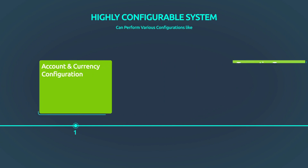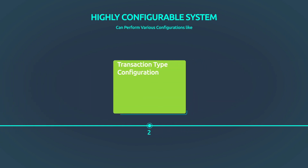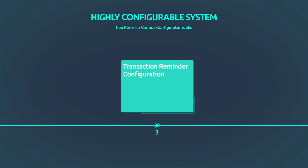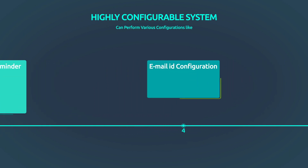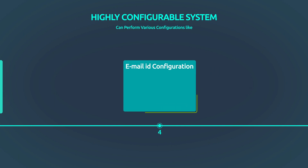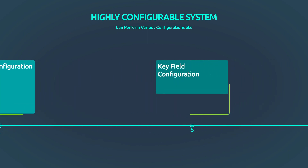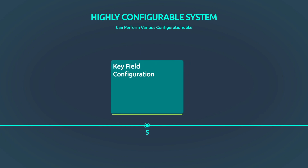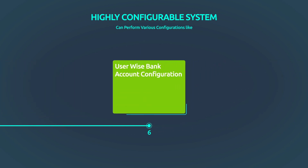It's a highly configurable system and we can do configurations like account and currency configuration, transaction type configuration, transaction reminder configuration, email ID configuration, key field configuration, and user-wise bank account configuration — that is, a user can do manual matching only for assigned banks.